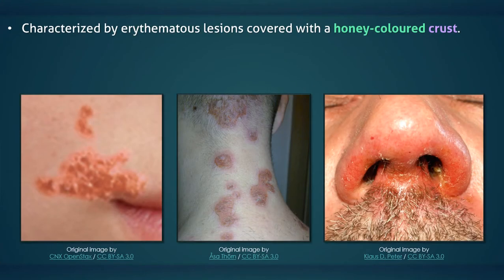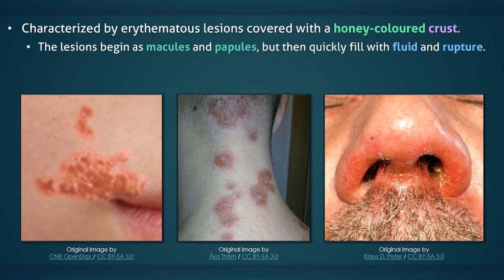Impetigo is characterized by erythematous lesions that are covered with a honey-colored crust. The lesions are usually asymptomatic, but they can cause itchiness. The lesions begin as macules and papules, but then quickly fill with fluid and rupture.